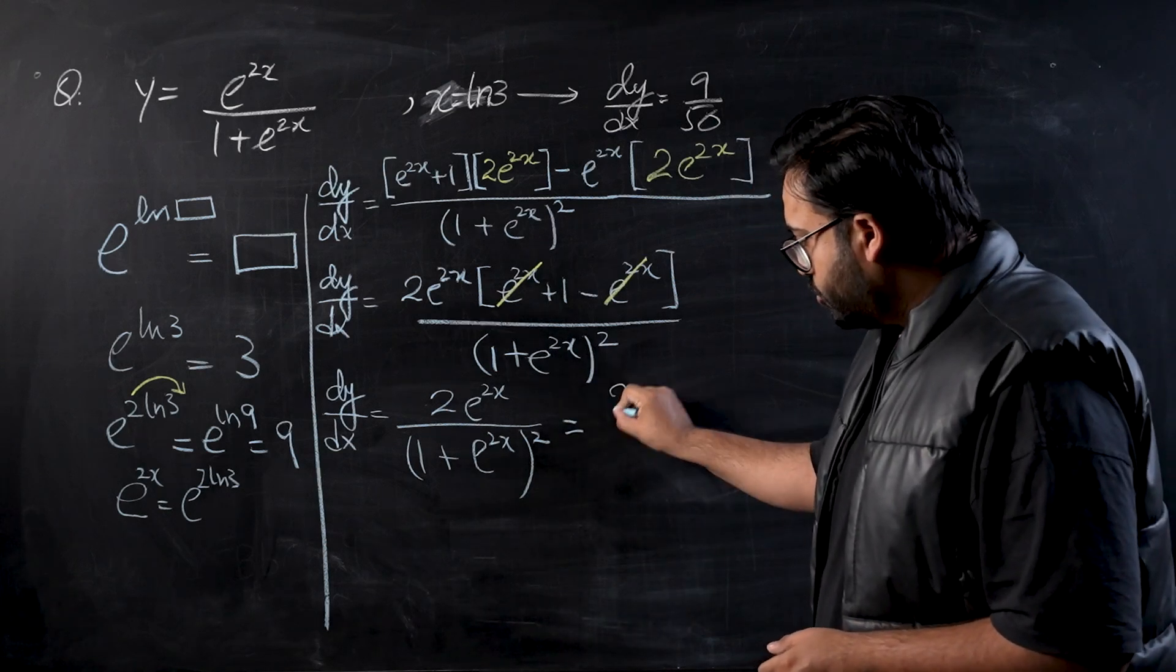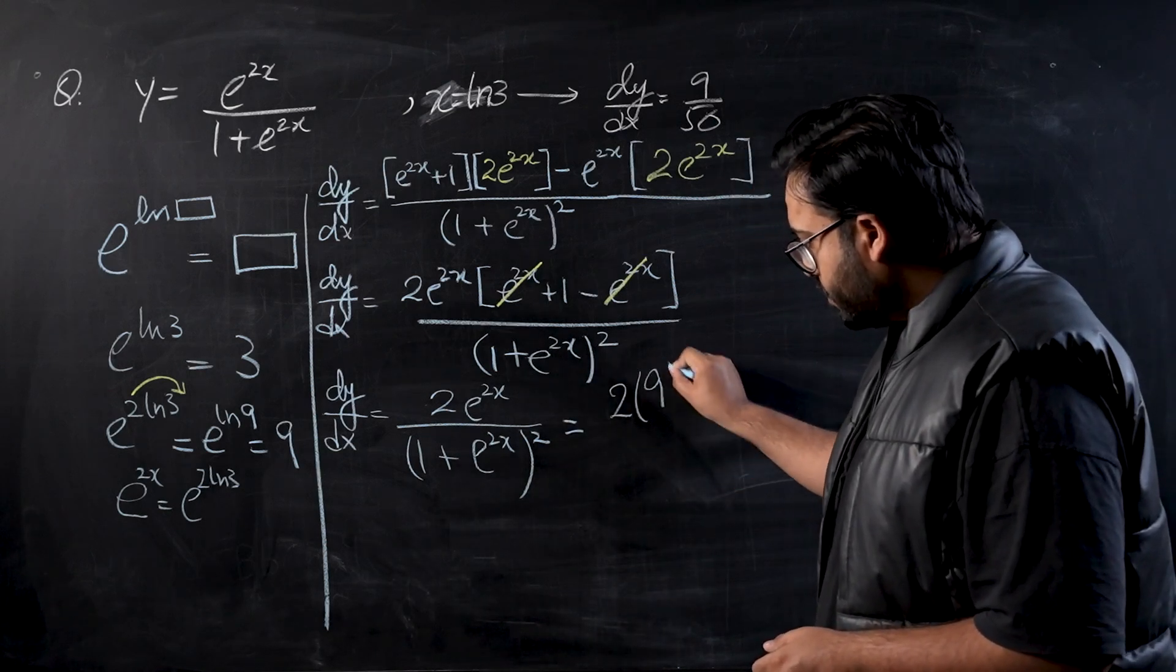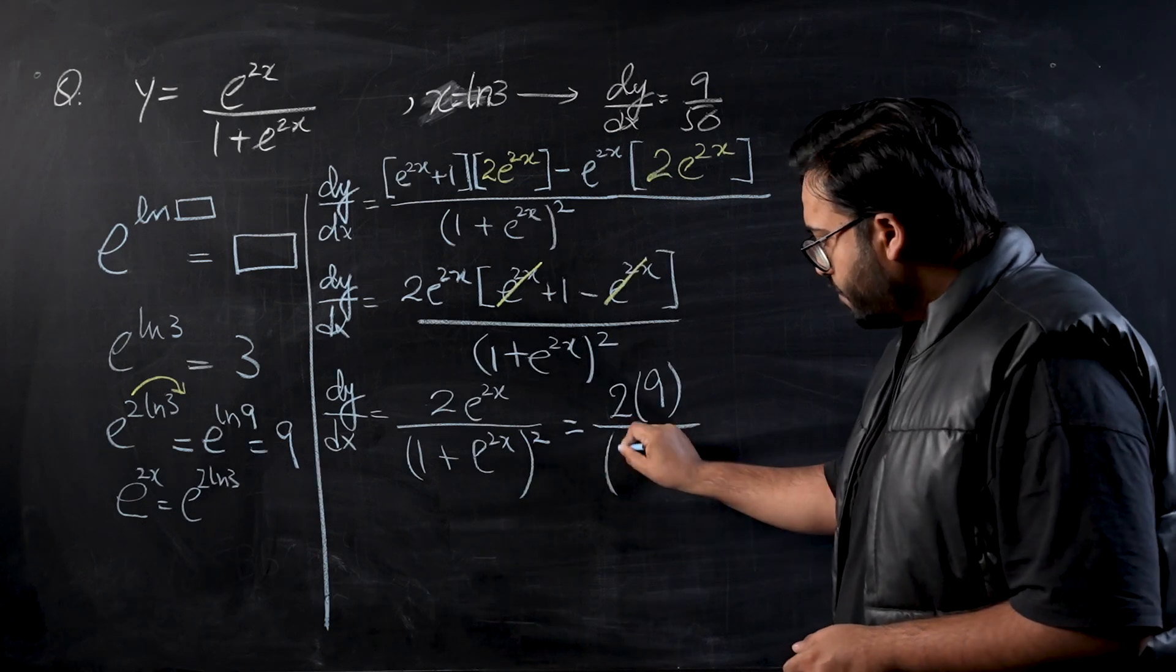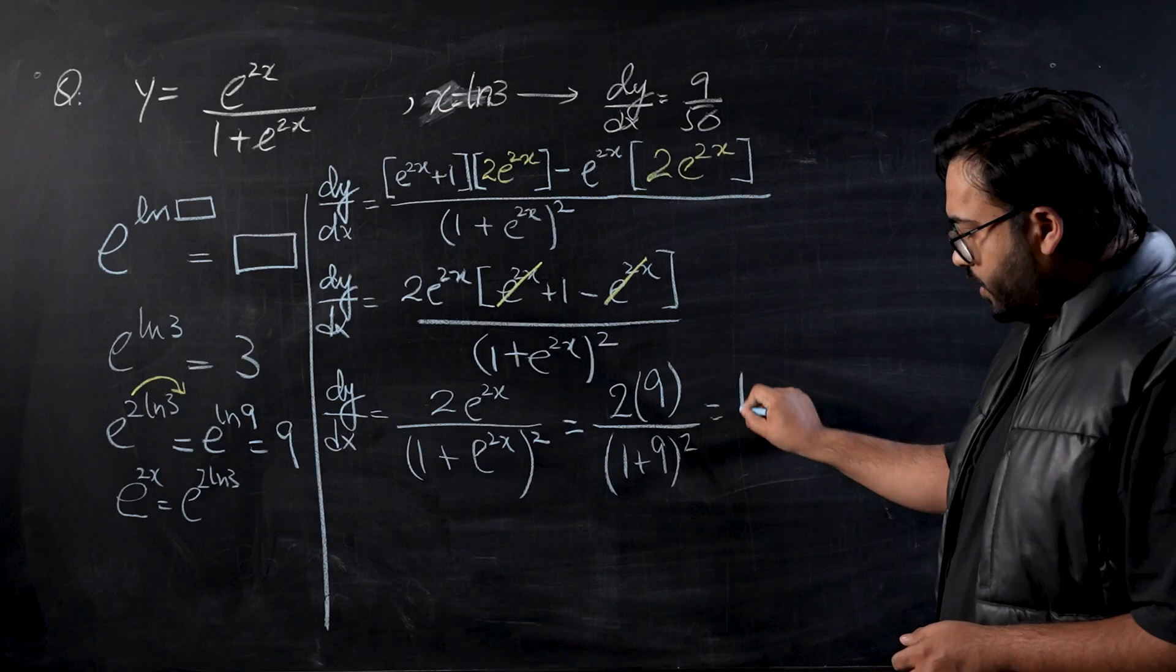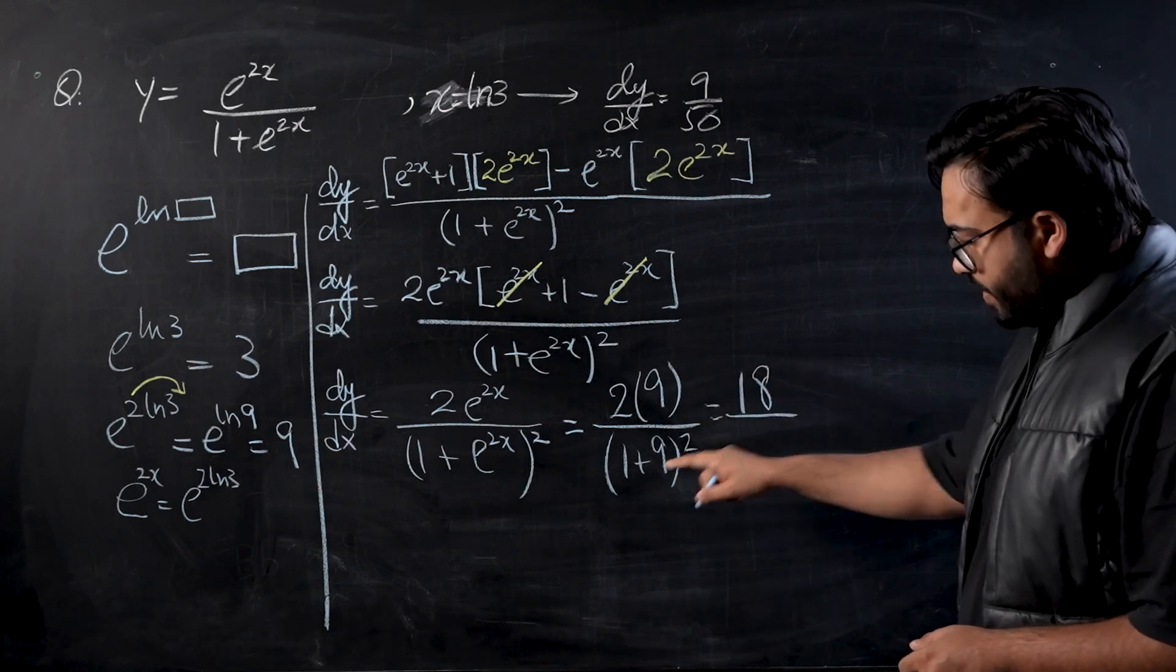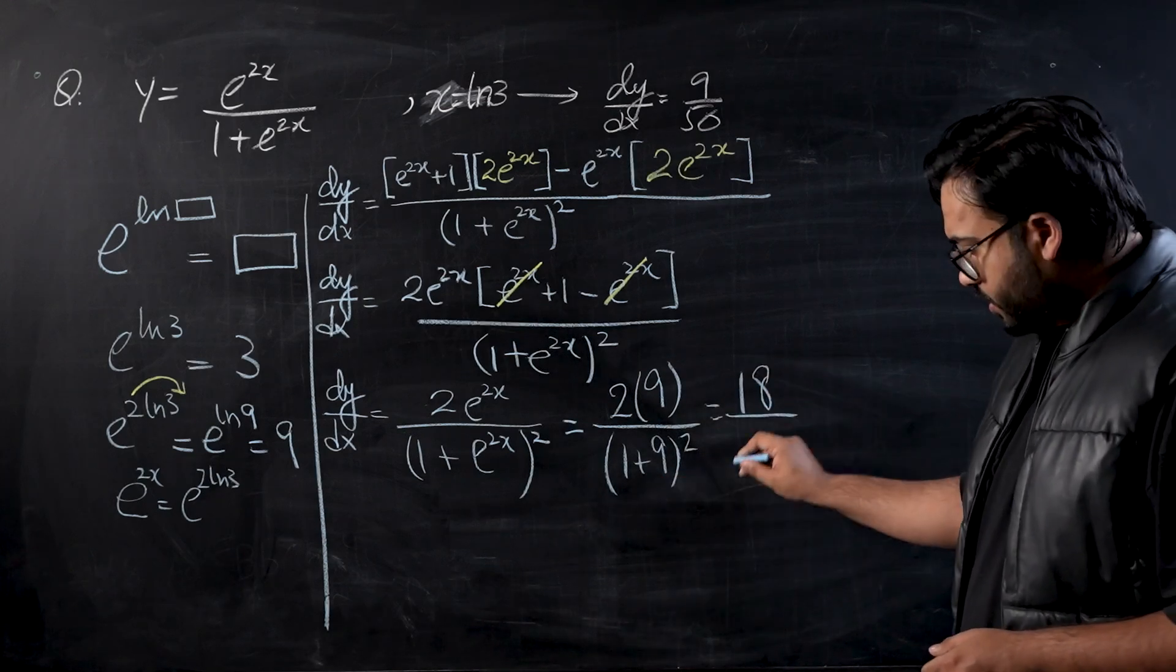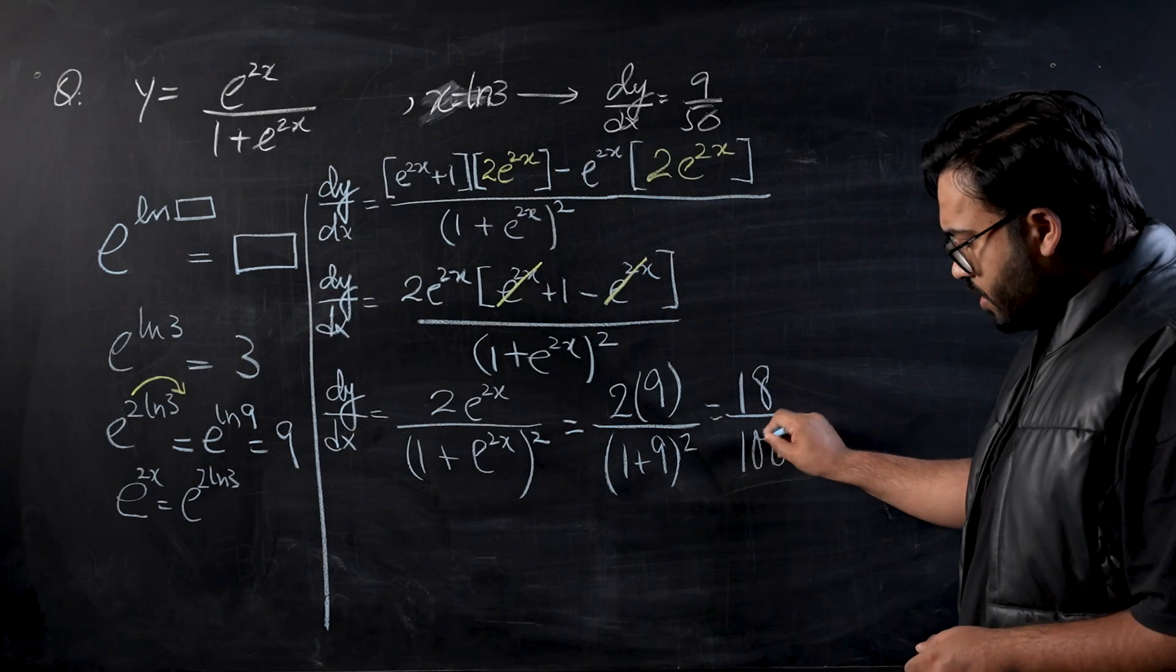So if we plug in that value, this will become 2 times 9 upon 1 plus 9 whole squared. So this would be 18 divided by 10 squared, which is 100, and if you simplify this would become 9 over 50.